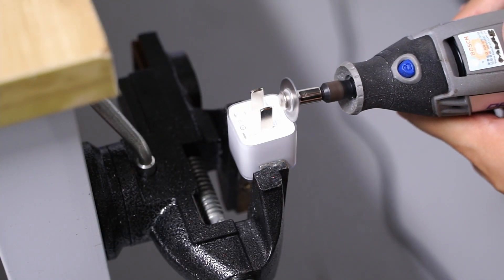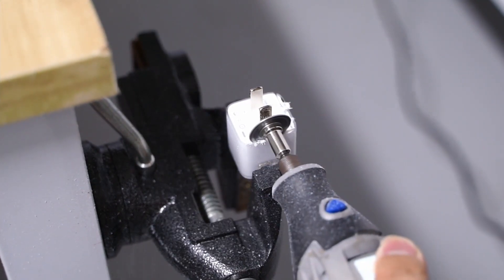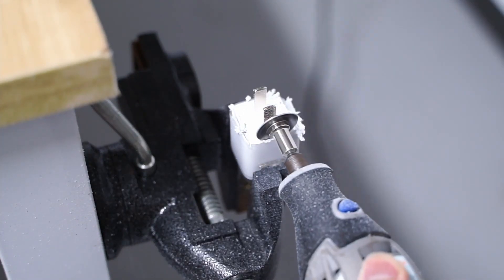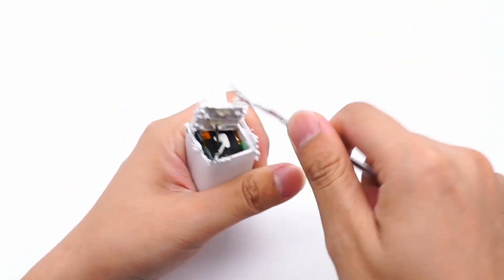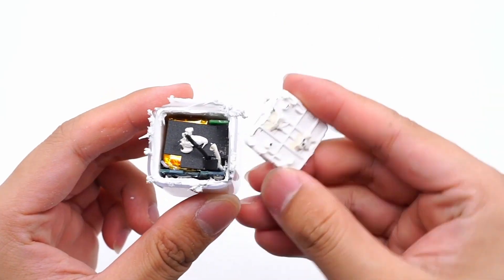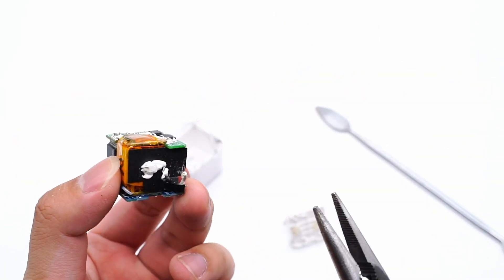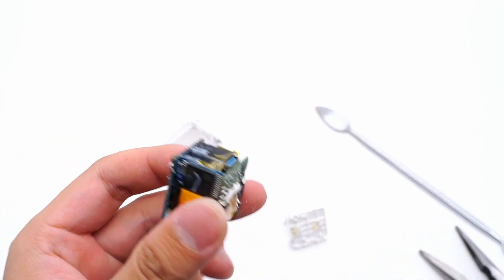Then, let's tear it down. Remove the shell. There is an isolation board between the input plug and the PCBA module for insulation. Take out the module. It consists of three small PCBs welding together. Just like U-shaped.